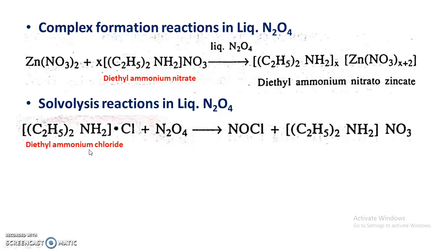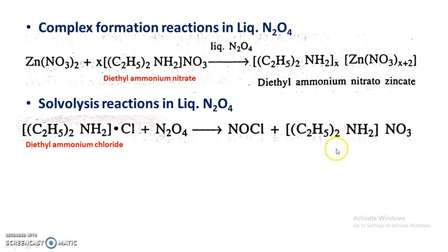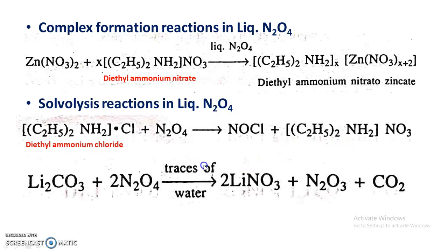In solvolysis reactions in liquid dinitrogen tetroxide, diethyl ammonium chloride mixed with liquid dinitrogen tetroxide undergoes solvolysis, producing NOCl (nitrosyl chloride) and diethyl ammonium nitrate. Similarly, lithium carbonate mixed with dinitrogen tetroxide in the presence of a trace of water undergoes solvolysis to give lithium nitrate, N2O3 (dinitrogen trioxide, which is unstable), and carbon dioxide.